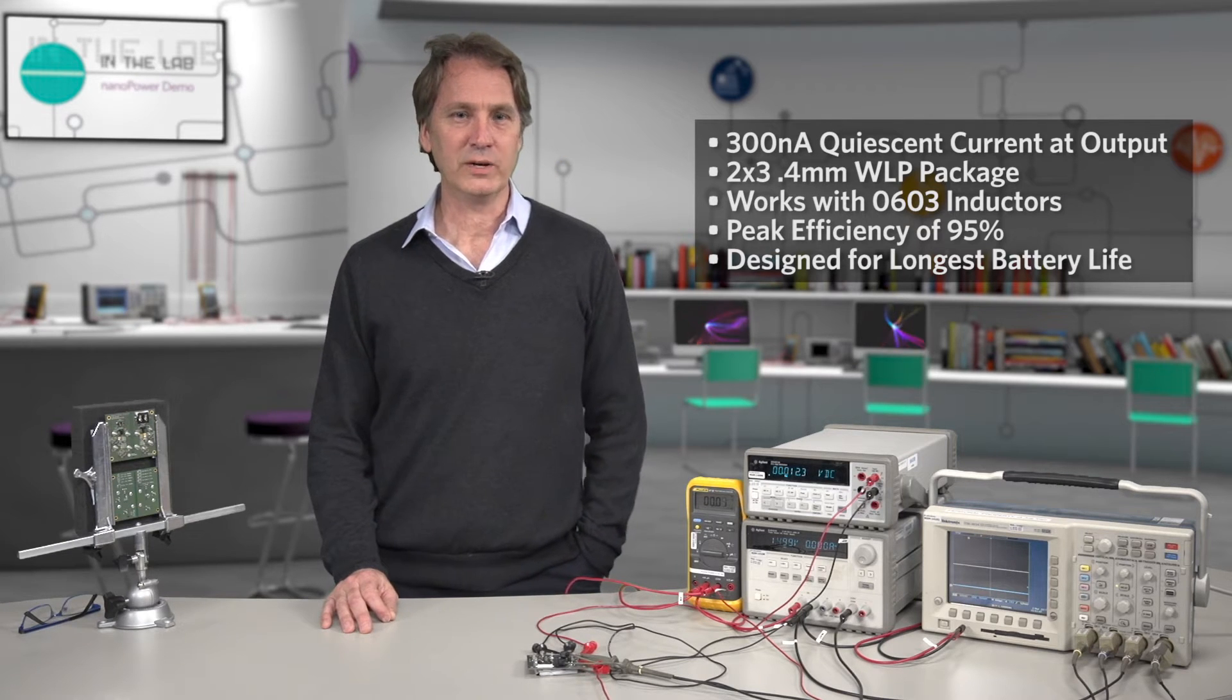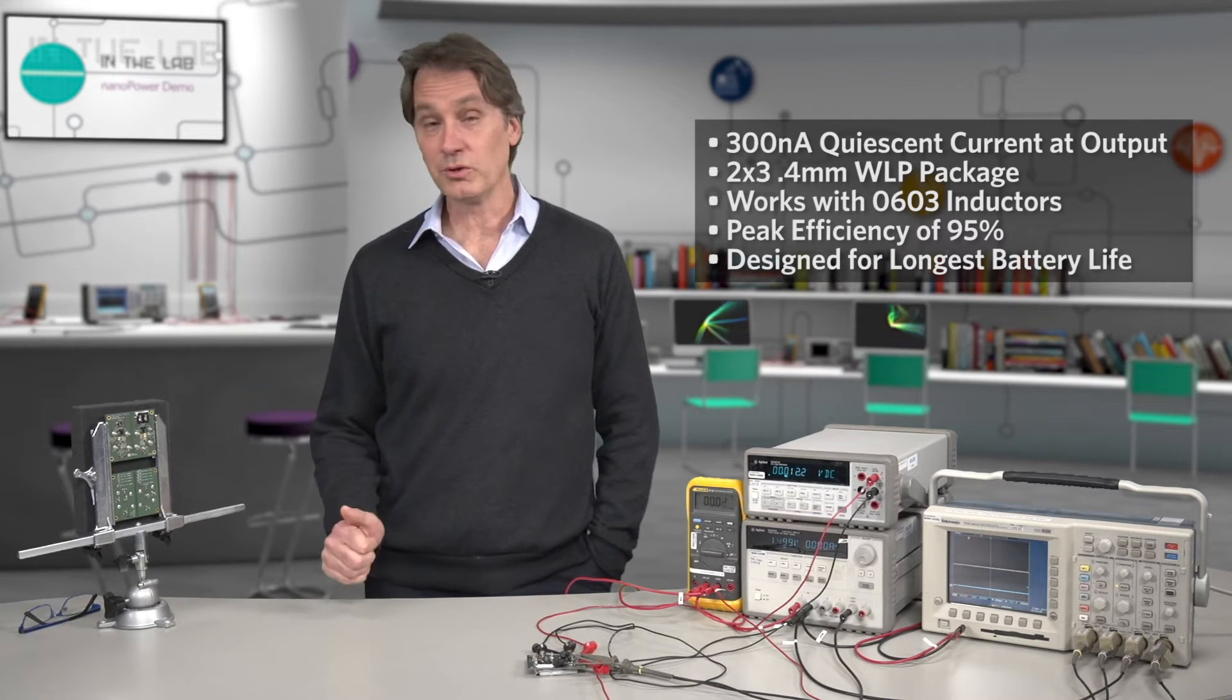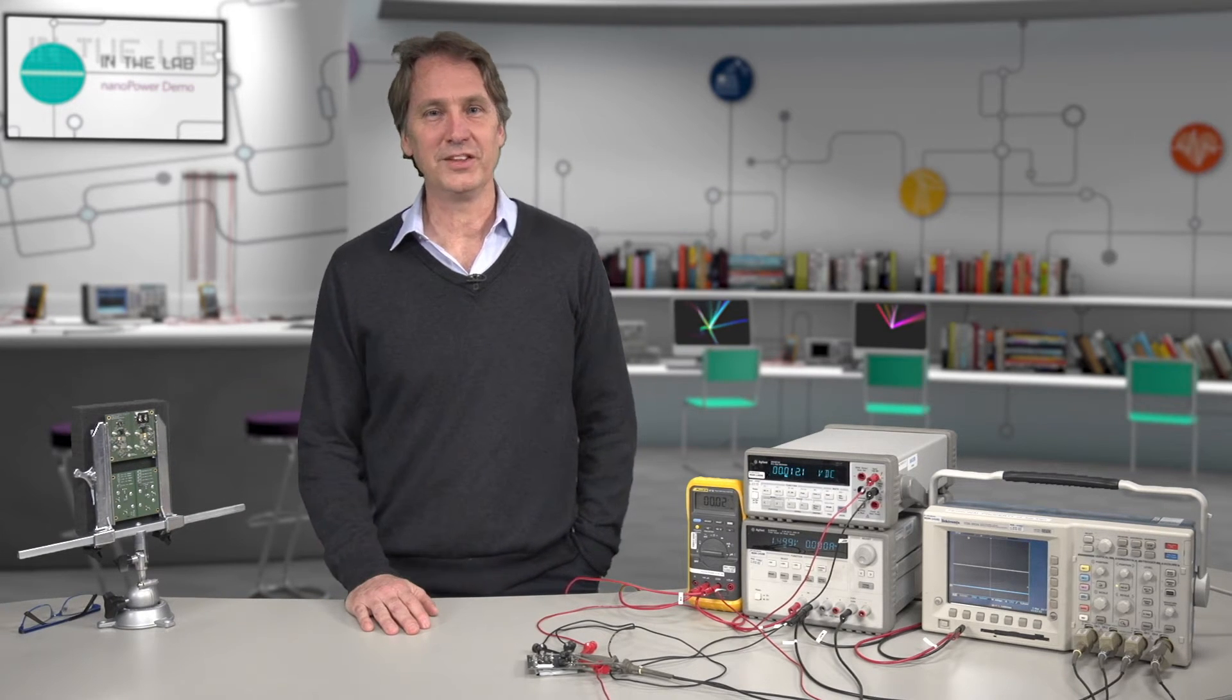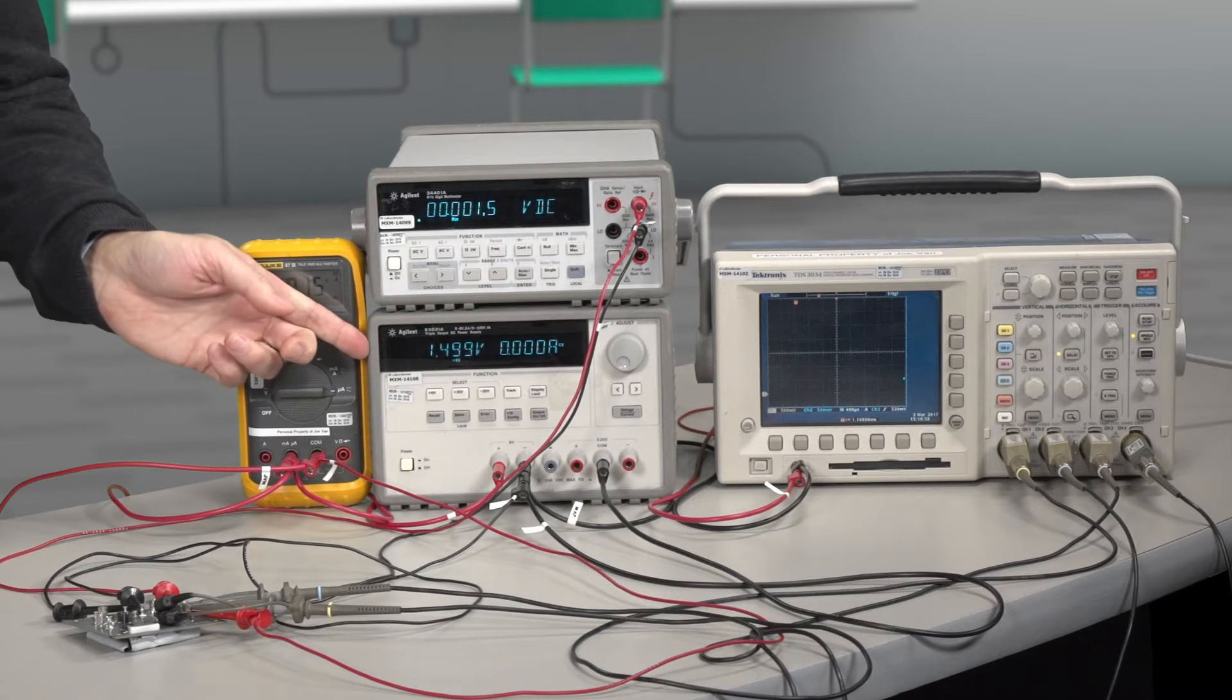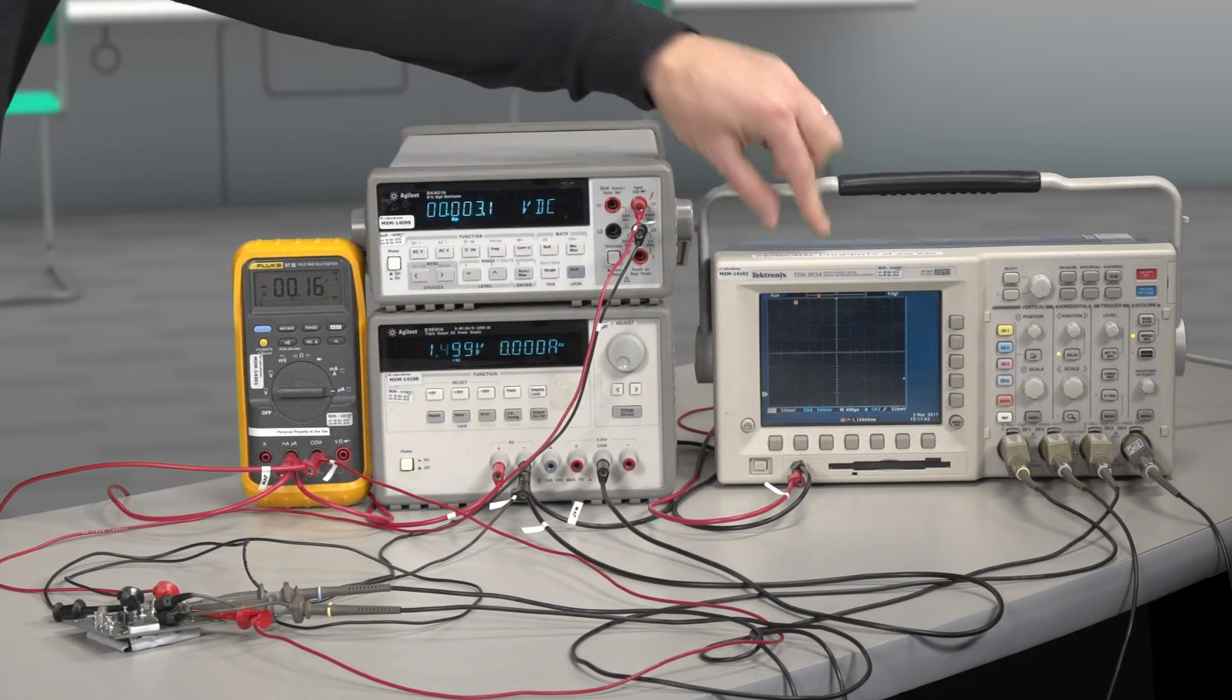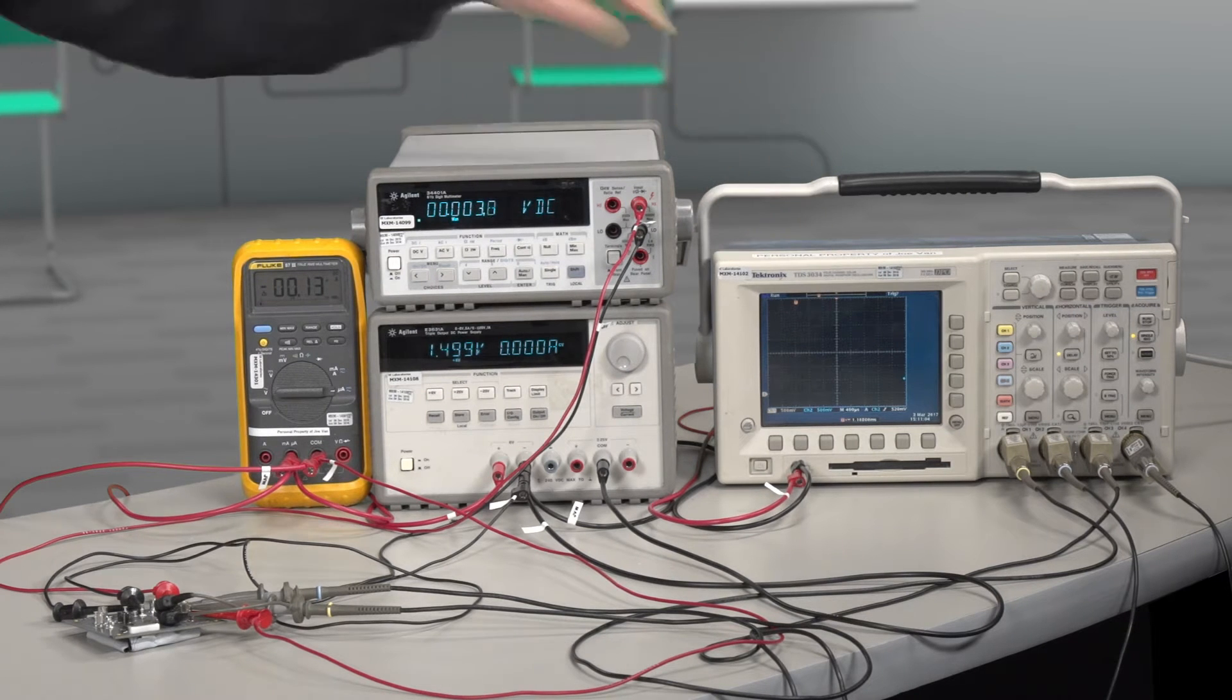It will be a great choice if you're designing a wearable or a hearable, so let's look at the CV kit and see how the thing powers up. Here we have a 1.5 volt supply, an output voltage meter, and a scope to look at the input and output voltage waveforms as we start up.